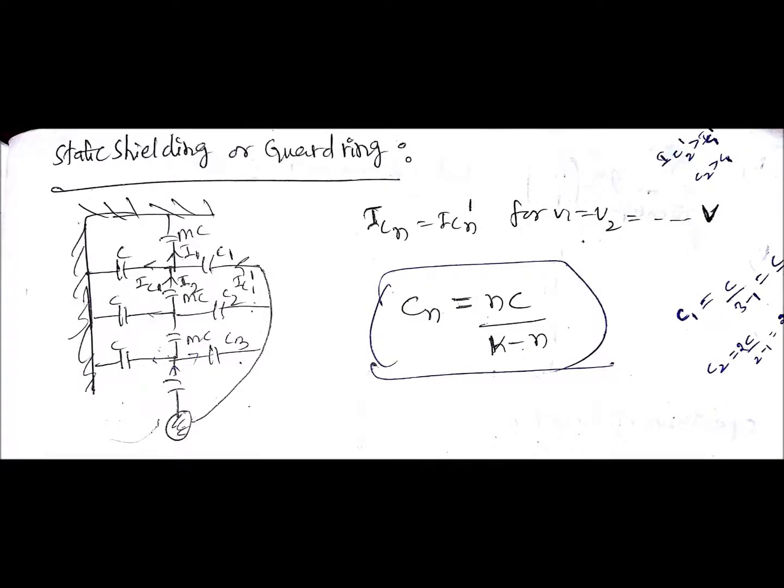One more method of making string efficiency 100% is static shielding or guard ring method. Here you are going to use one ring which is having the capacitances C1, C2, C3. Remember, C1, C2, C3 are not the capacitances of insulators. We have considered the capacitances of insulators as constant, like the actual case, and with that only you are making the voltages equal by adding the capacitances with a ring.